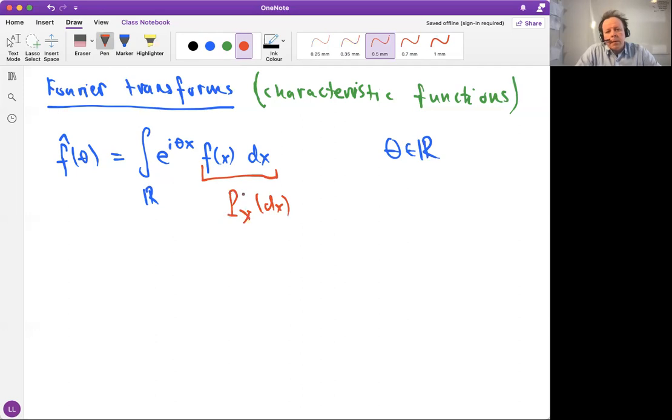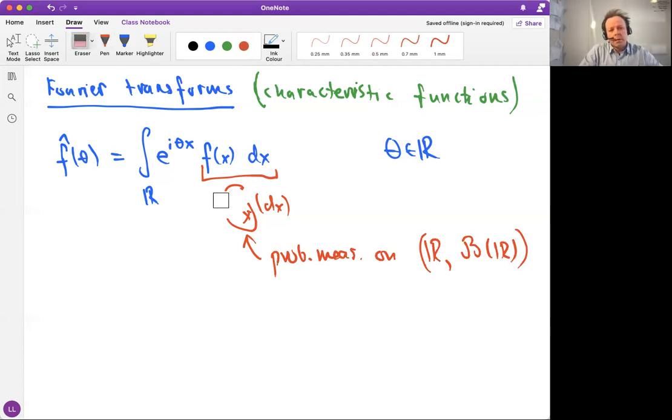And then we recall that the law of a random variable is a probability measure itself on the real line. So we could think of actually replacing this thing by a probability measure on the real line.